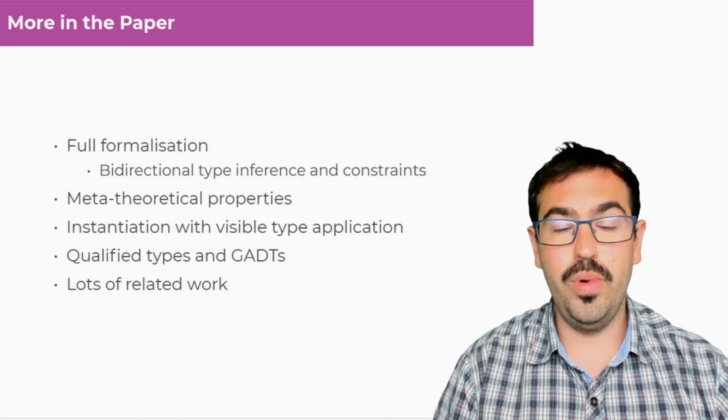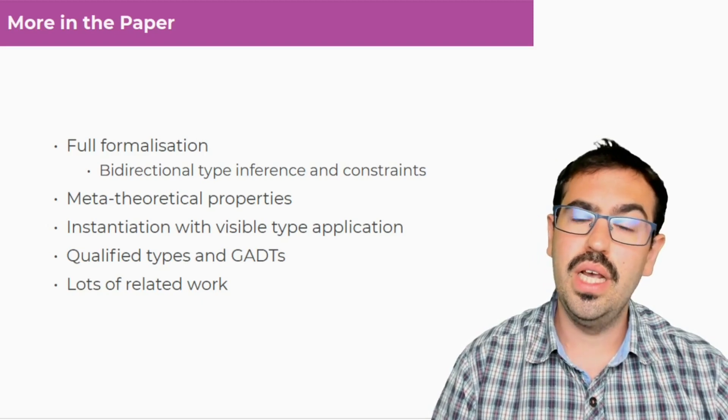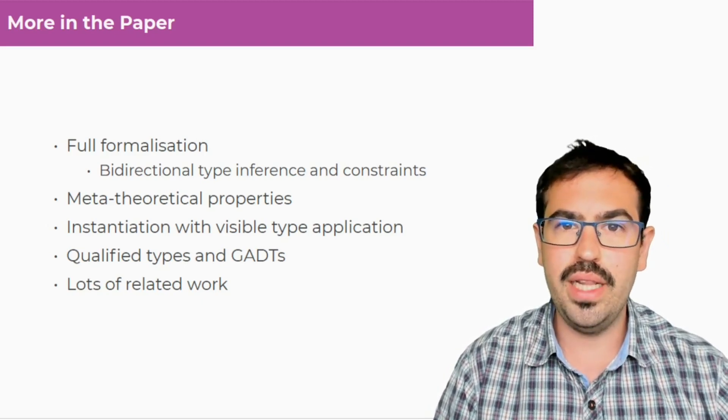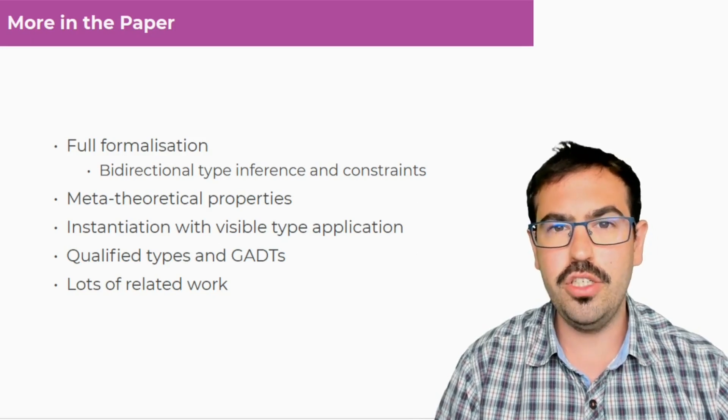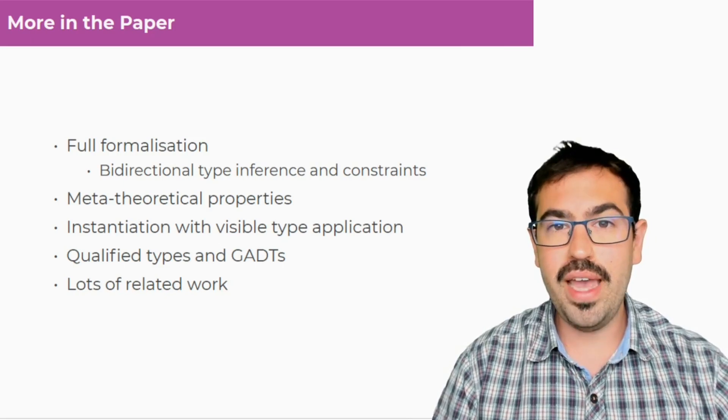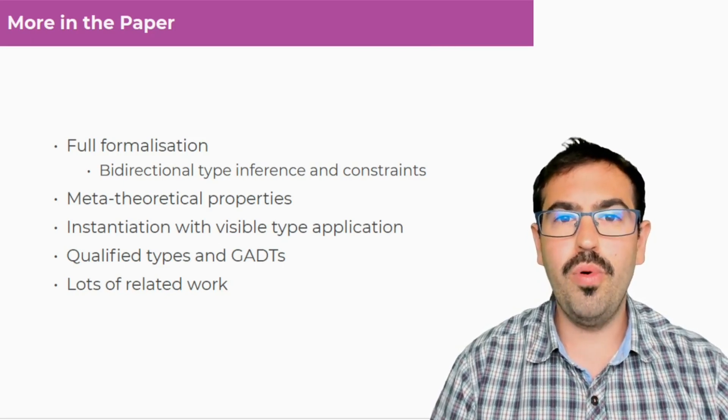Of course, we talk about metatheoretical properties. Also, we talk about how we integrate QuickLook with visible type application. And the reason is that when QuickLook fails, the easiest way to tell the compiler what the instantiation should be is to use visible type application. So we think it's really important that these two things play together well.